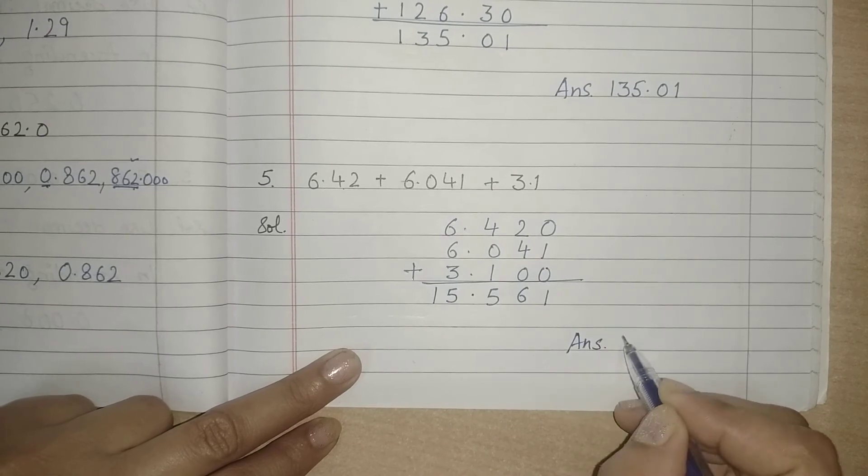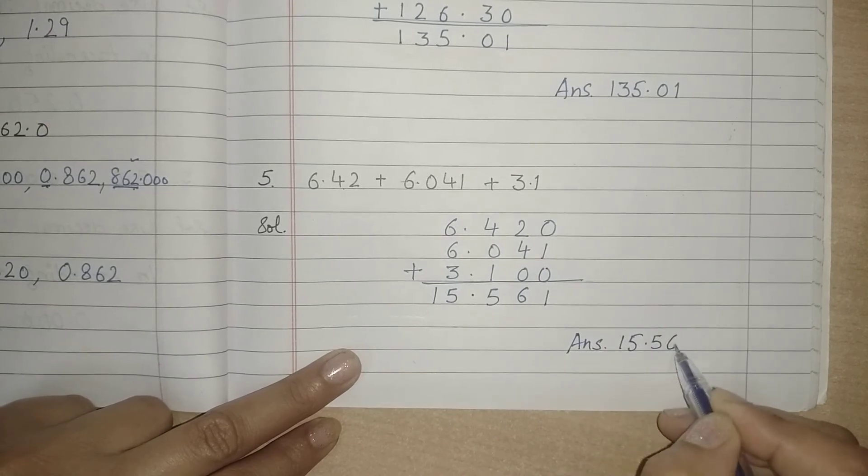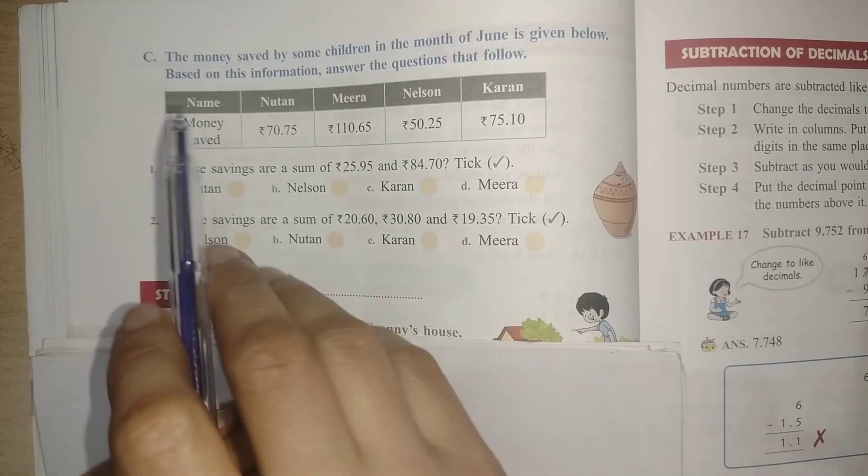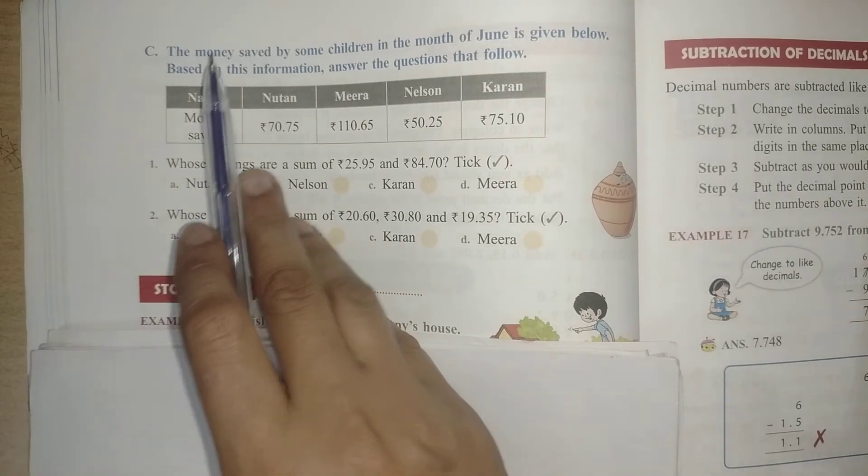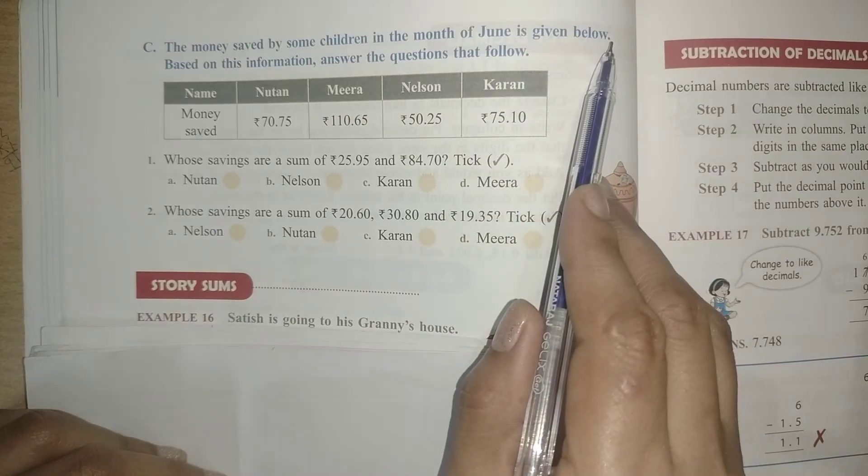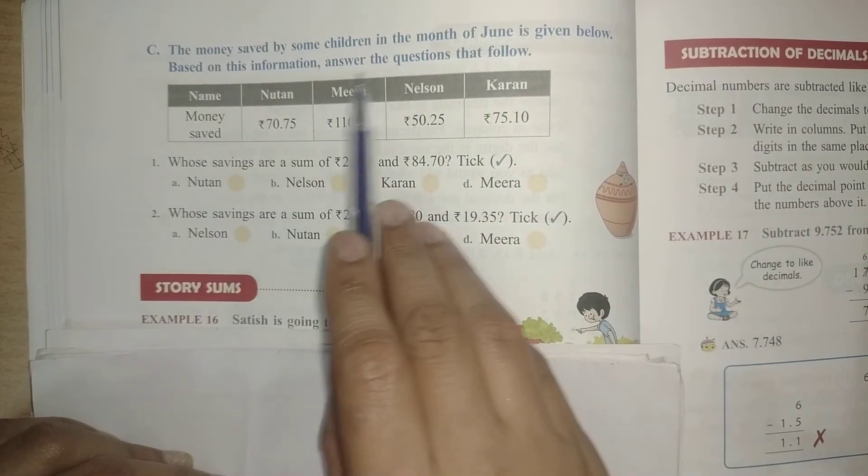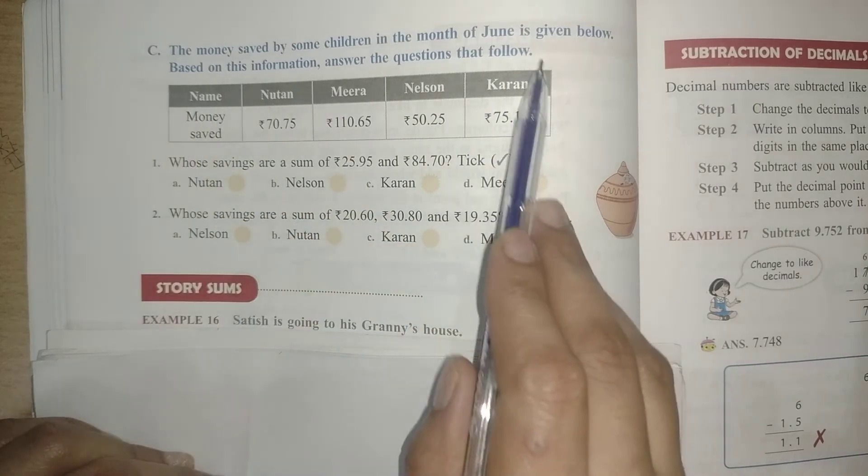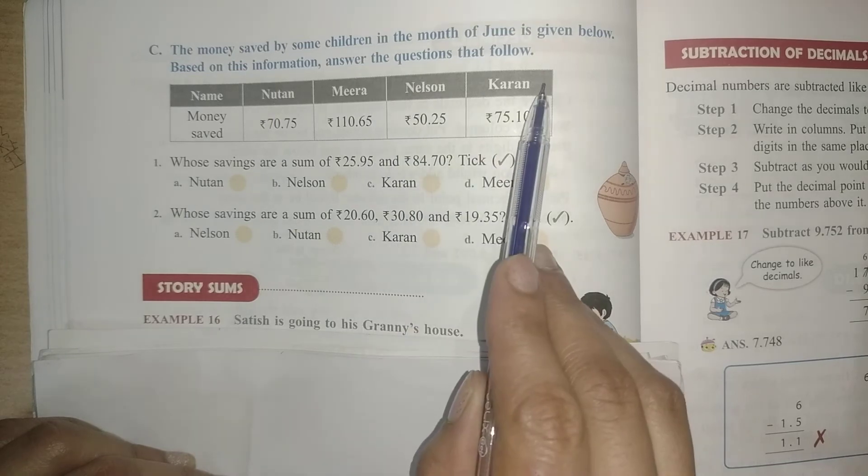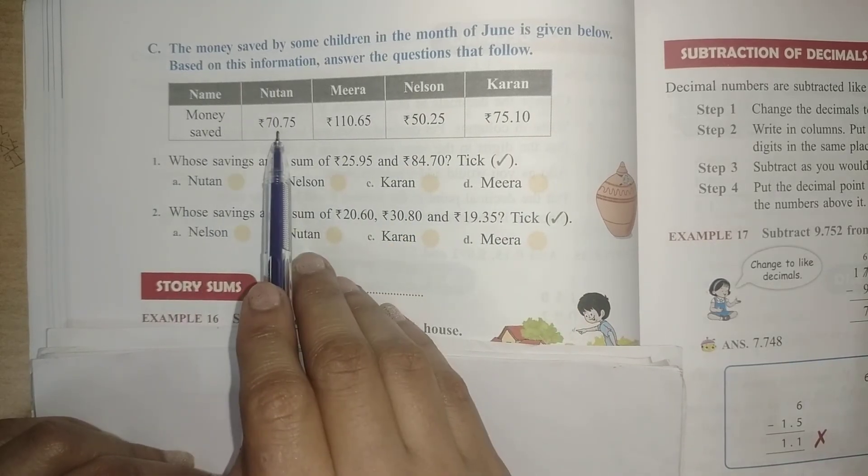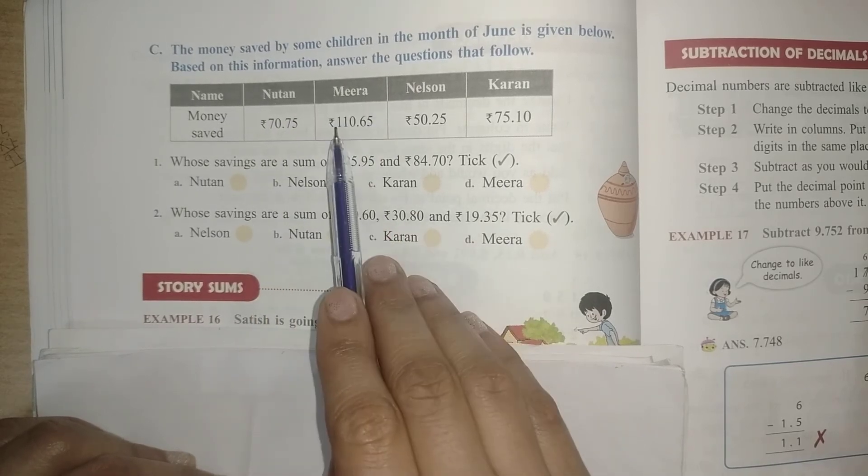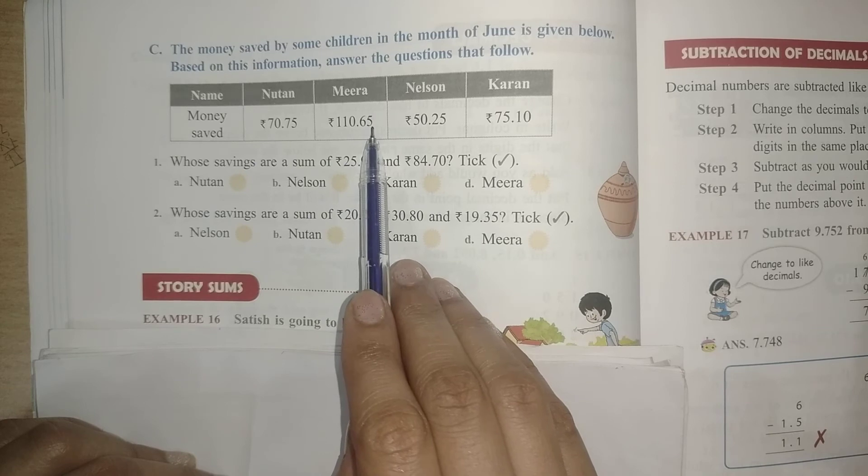Part C: The money saved by some children in the month of June is given below. Based on this information, answer the questions that follow. Here a table is given with the names of students who saved money in June: Newton saved 70.75 rupees, Meera saved 110.65 rupees, Nelson saved 50.25, and Karan saved 75.10.